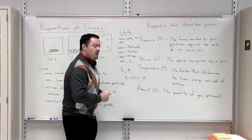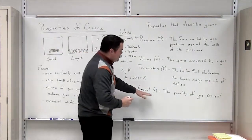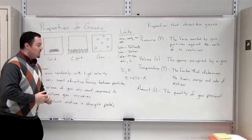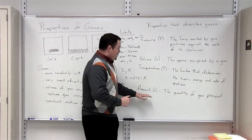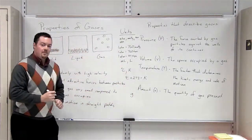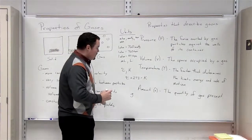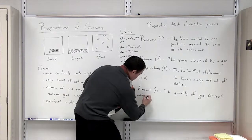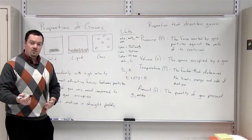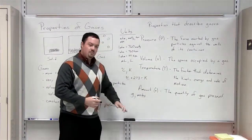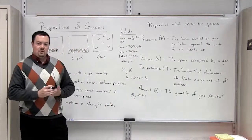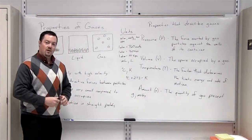Finally, the fourth property that we use to describe a gas is simply amount, denoted by a lowercase n. Amount is the quantity of gas present. The units we use to measure amount of gas: in some cases you will see it measured in grams, and in other cases it will be measured in moles. Just like the temperature of a gas must be measured in Kelvin to use it in calculations, the amount of gas must be in moles. So if you are given grams, you must first convert those grams to moles before you can use that variable in your calculation.